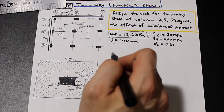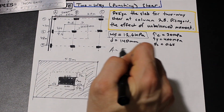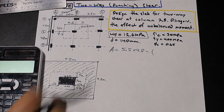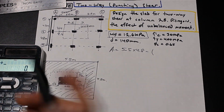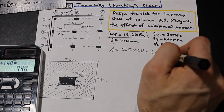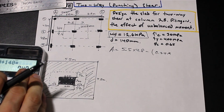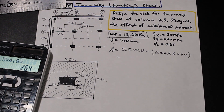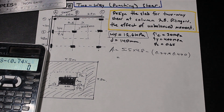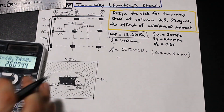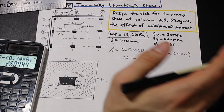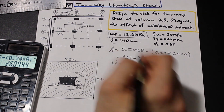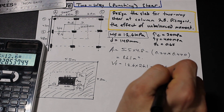Let's calculate area A. The full tributary area is 5.5 × 4.8, then we subtract the critical area inside: 600 + d = 740 mm, and 300 + d = 440 mm. Calculating the tributary region area A gives 26.1 m². The factored shear force Vf acting on this area is then Vf = wf × A, which gives Vf = 329 kN.